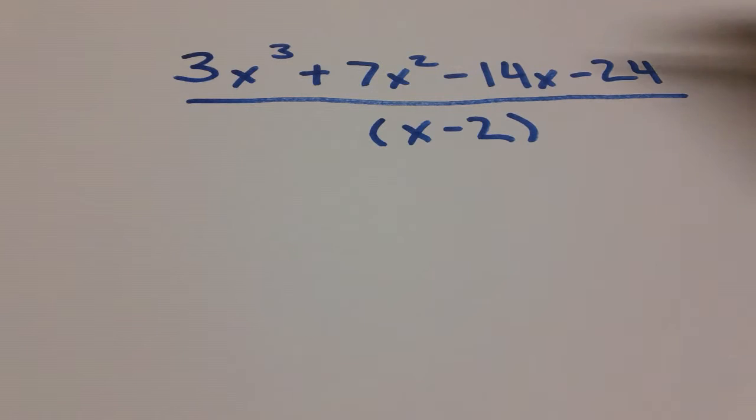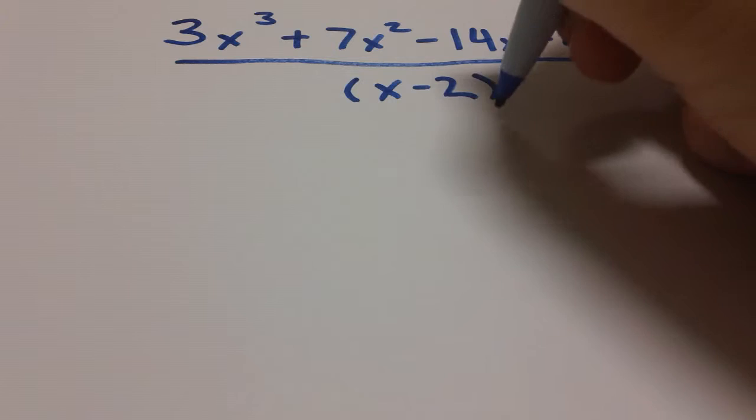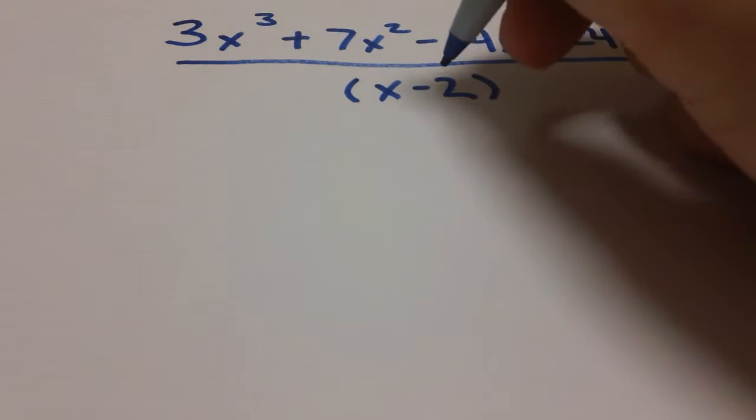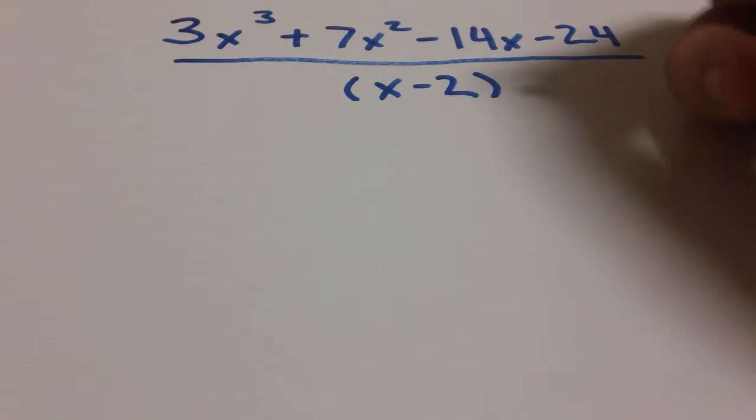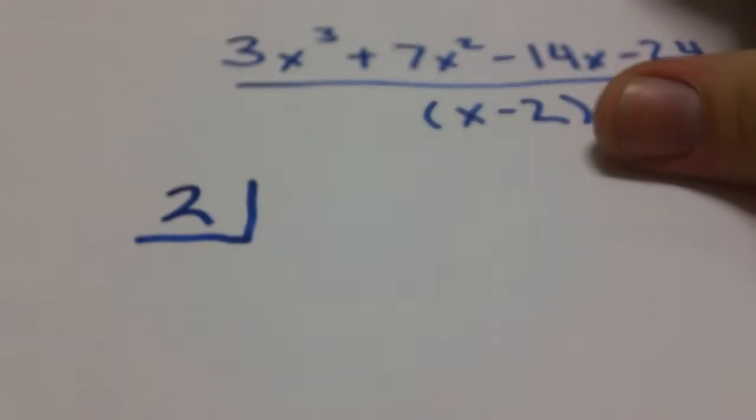So we'll go ahead and start doing this process. Now to begin synthetic division, we want to isolate the number in our divisor. This is a negative 2. What you always want to do here is take this number and flip the sign. So a negative 2 is going to become a positive 2. At the beginning of our little work area down here we're going to write a positive 2 and just kind of put it in a box, sort of a half box, separate it from the rest of the numbers we're going to put down.